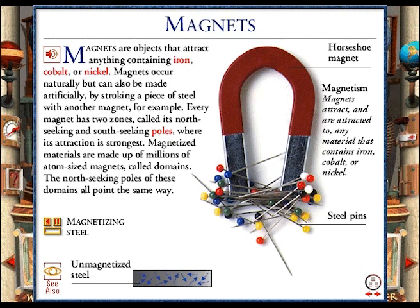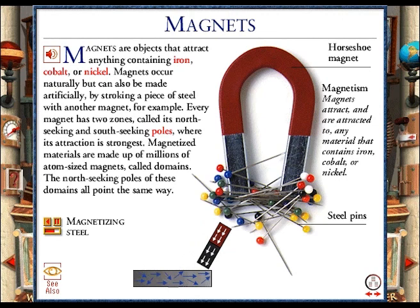Unmagnetized steel has groups of atoms called domains. These domains point in many different directions and their magnetic effect is cancelled out. If steel is stroked with a magnet, it becomes magnetized. This is because stroking a piece of steel with a magnet moves the domains so that they all point in the same direction.